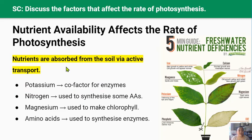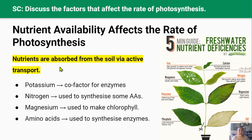Nutrient availability also affects the rate of photosynthesis. Soil is a major source of nutrients for plants — they need to absorb essential nutrients like potassium, nitrogen, and magnesium to support healthy cellular processes and growth. Nutrients must be dissolved in water and are taken up by root hair cells on the roots of plants. Because nutrient concentration in the soil is much lower than inside the plant, plants cannot take up nutrients by osmosis or diffusion; instead they must use active transport to move nutrients against their concentration gradient, which requires energy.